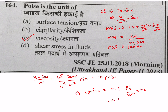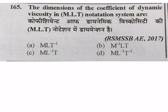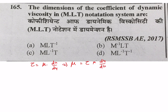Next question: the dimensions of the coefficient of dynamic viscosity mu in the MLT notation system. From Newton's law: tau equals mu times du/dy. So mu equals tau divided by the velocity gradient du/dy. Tau is stress, and we already know the unit of coefficient of viscosity is Pascal into second or newton per meter square into second.